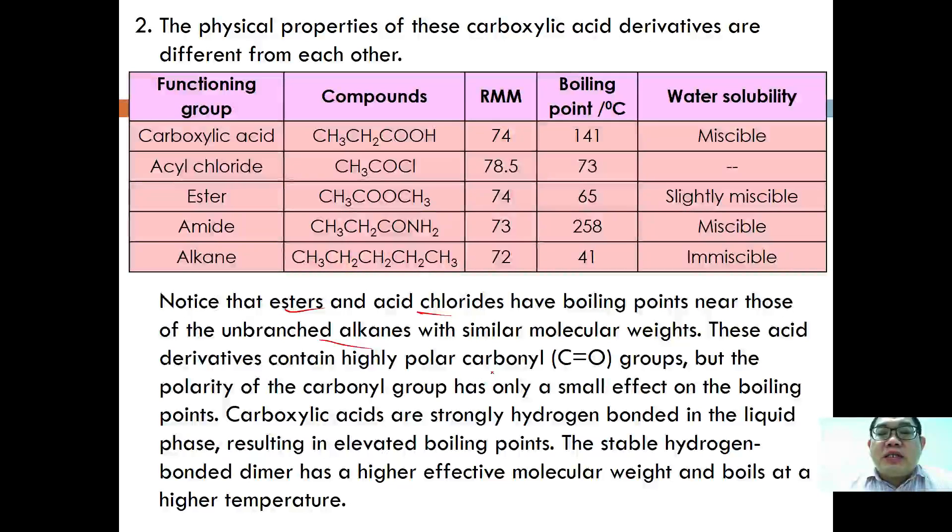However, C=O is slightly more polar, making a small effect on the boiling point. Carboxylic acids are held strongly by hydrogen bonds in the liquid phase, resulting in elevated boiling points. The stable hydrogen bond in dimers has a higher effective molecular weight and boils at a higher temperature.